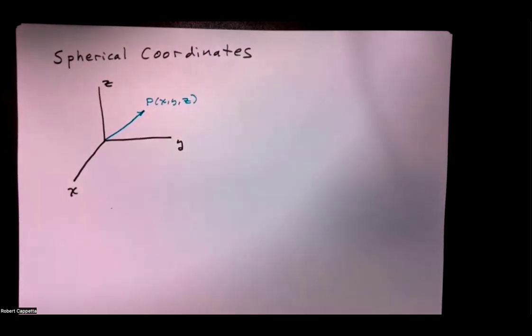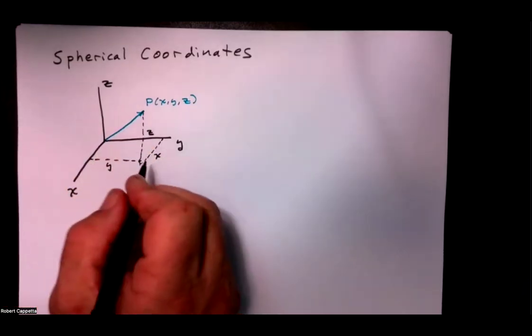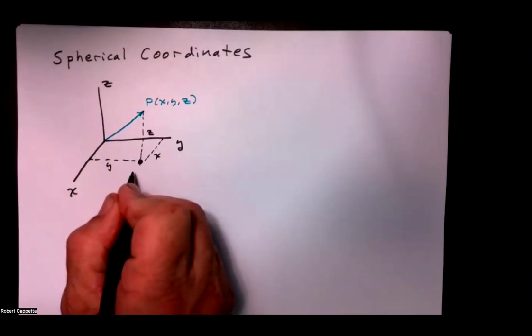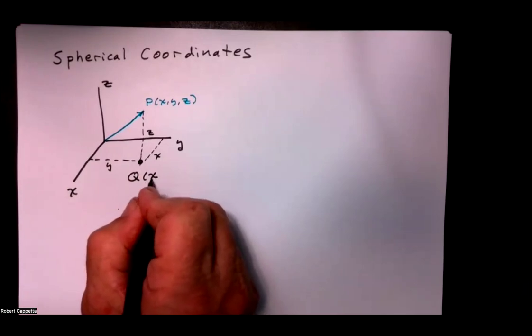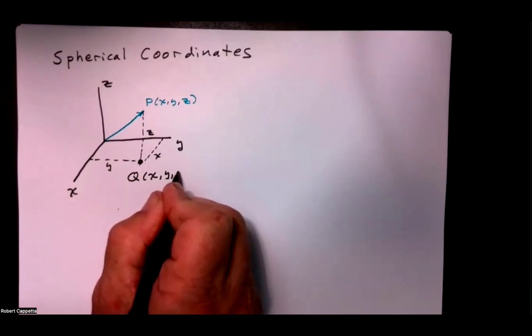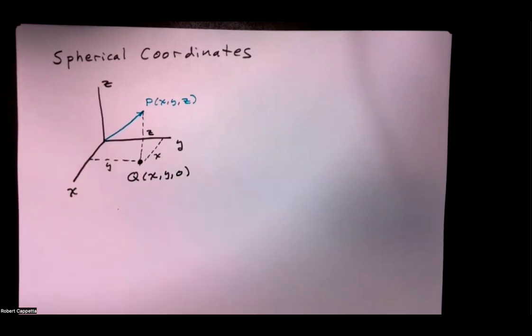We want to project that point down into the xy plane — so where is the point x, y, 0? Projecting it down into the xy plane we get this point Q. Q is the point x, y, 0. So we've taken the point P and projected it down into the xy plane, and we have that point Q which is x, y, 0, as you see from our picture.